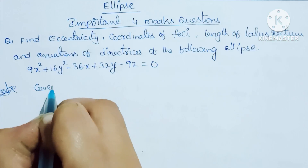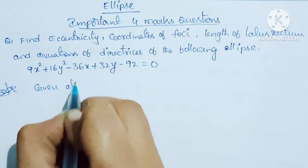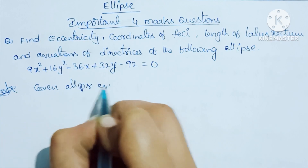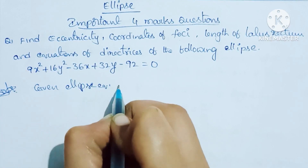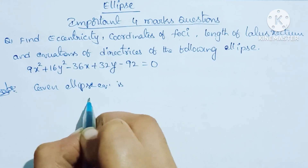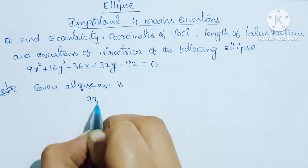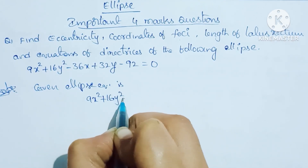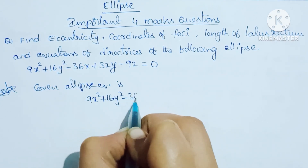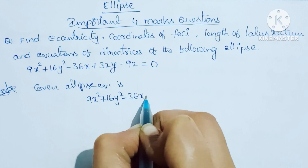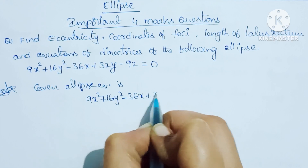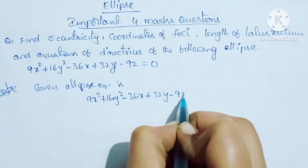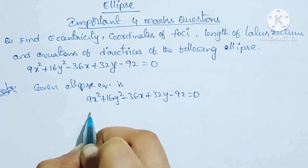The given ellipse equation is 9x² + 16y² - 36x + 32y - 92 = 0.